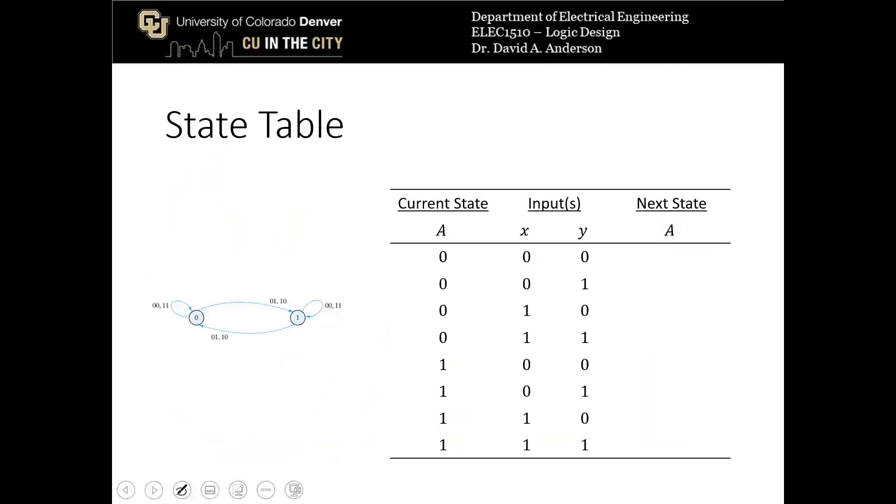So for the second state diagram, the one from the textbook, we have two inputs. Now I've rearranged the state table to have the current state on the leftmost side of the state table, which is normally how it's drawn. I've also called the current state A. The inputs are x and y. When I'm in state 0, shown here, and the input is either 0, 0 or 1, 1, I return to state 0. So I can fill in those rows on the truth table, or the state table, I should say.